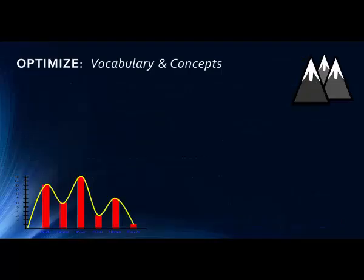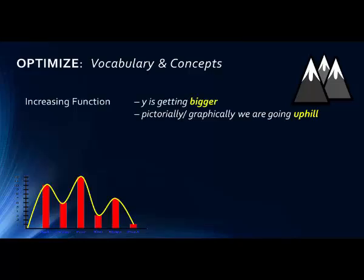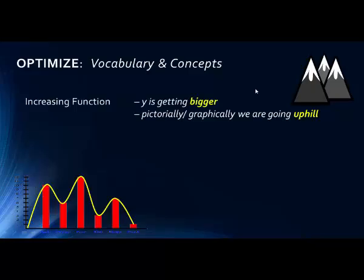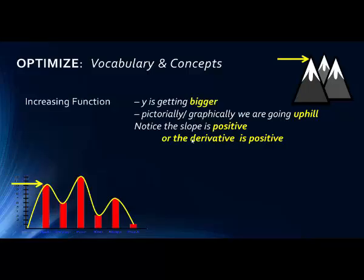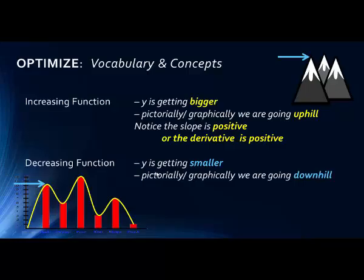Here we can see a continuous graph, also denoted by a bar graph. The yellow arrow points toward one peak and the blue arrow points toward one valley or minimum. Notice that the y value is getting bigger when the function is increasing — as we read the function from left to right, if the function is going up, we say it is increasing. The slope is positive, or we can say the derivative is positive, since the derivative is the slope at a point along the function.